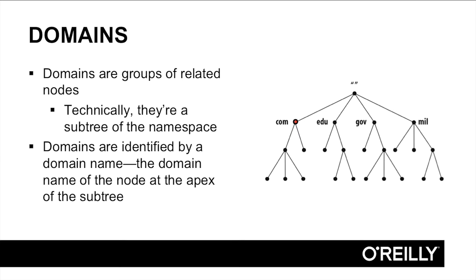If you look at the diagram on the right, you'll see that we're highlighting a node whose domain name is com, but in addition to identifying that node, that domain name also identifies an entire domain which consists of all of the nodes at or below com in the namespace, indicated by the red triangle.